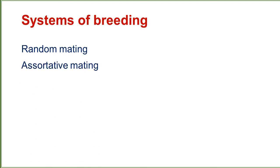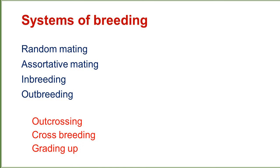Systems of breeding include: random mating, assortative mating, inbreeding, outbreeding — and within outbreeding, outcrossing, crossbreeding, and grading up are also included. These are the systems of breeding existing in animals which are being used in the industry or field.